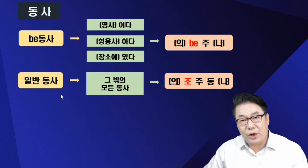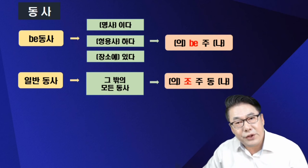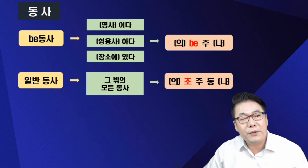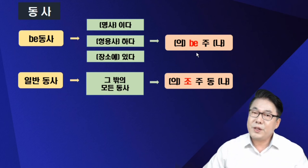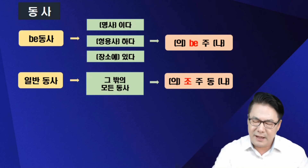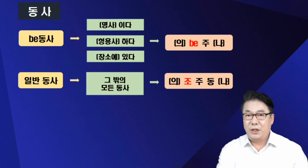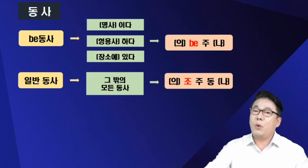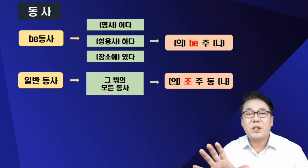비동사와 일반 동사 구별이 됐다면, 이제 경부선 버스를 타겠죠. 그런데 버스를 탔는데도 좌석을 찾아야 될 거 아니에요. 주어에 따라 Am, Is, Was를 골라서 써야 되는데 이걸 연습을 안 했던 거죠. 그러니까 토익 900점 고득점자들도 막상 말할 때는 여기서 막히는 겁니다. '그녀는 어제 어디에?' — Where was she? 3인칭 단수의 과거니까 was가 나와야 되는데. 이게 두 번째 사칙연산, 비동사 제대로 활용하기입니다.